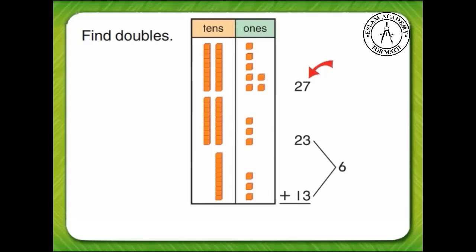Seven 1s plus six 1s is 13 1s. When we regroup, we have three 1s and one new 10. One 10 plus two 10s plus two more 10s plus one more 10 equals six 10s.